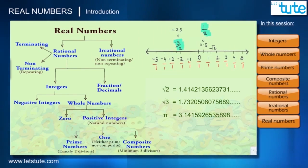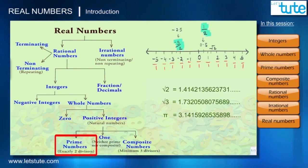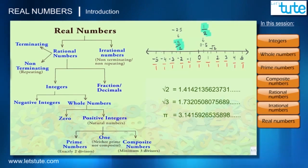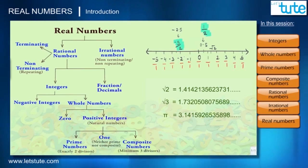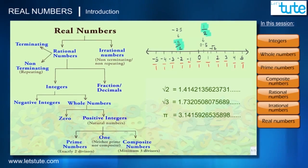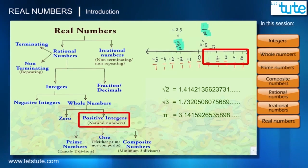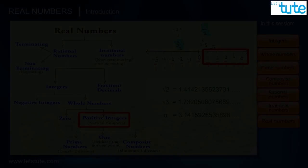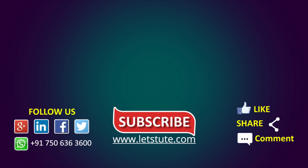So we have seen that under rational numbers we have whole numbers, integers, prime numbers, and composite numbers. Every point on the number line is considered a real number. This session was all about real numbers. In the next session we'll learn about properties of positive integers. If you liked the video, please hit the like button and share it with your friends.